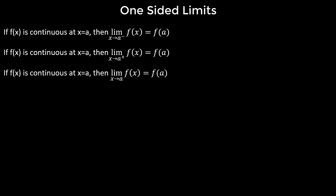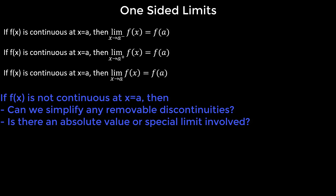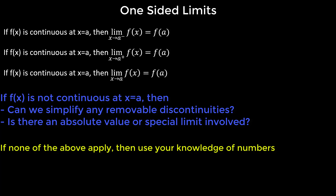Now here's where we need to get more technical, because if it's not continuous we need to ask ourselves: is there a way to simplify the function? Is it a removable discontinuity, or can we rewrite it as an absolute value function? Absolute value functions are piecewise functions, and piecewise functions are very nice for one-sided limits. If we can't do any of these, we'll just have to use our knowledge of numbers.